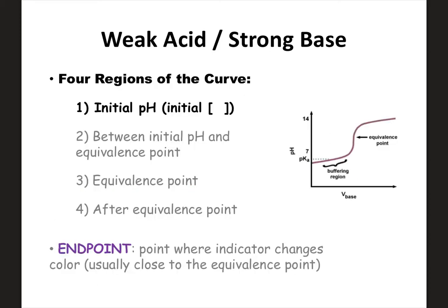Just like we went through the different regions of the curve for a strong-strong titration, we're going to do the same now for a weak-strong titration. We're going to look at the pH initially first, then work through the other regions. You need to keep straight that this is a weak-strong titration and understand the steps required at each different region.